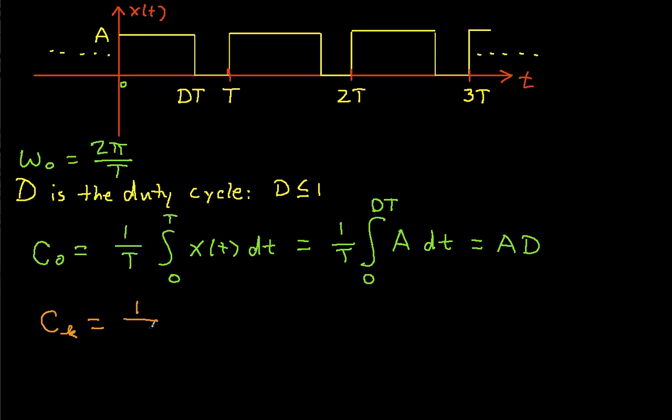So this is going to be 1 over T, the integral from 0 to T, X(T). And now the thing that's different between this and C0 is e to the minus j k omega 0 T dT.